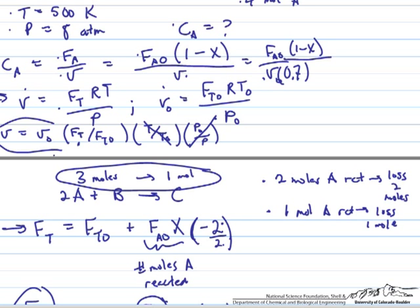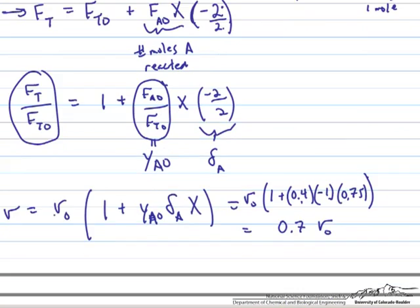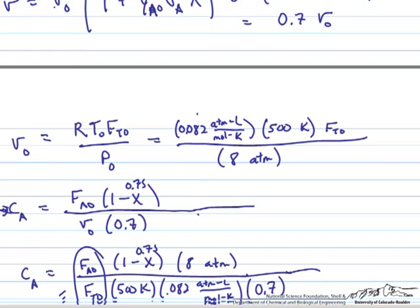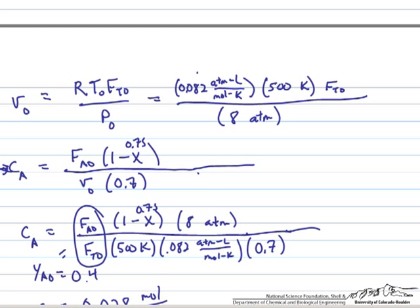And so if we do that on another page that I have already written up, we are again using the ideal gas law. So the volumetric flow rate is equal to this RT0, Ft0 over P0, so R the gas constant times the temperature, times the total molar flow rate over the pressure. I can just use this value of the gas constant in terms of atmospheres, liters, moles, and Kelvin, temperature and pressure. Given the problem statement, I am just going to let the Ft0 float for a minute.